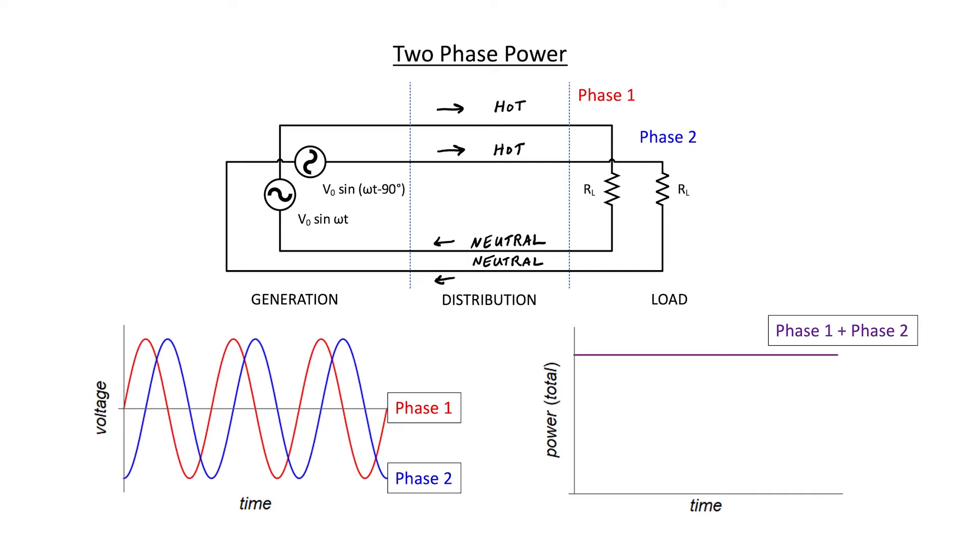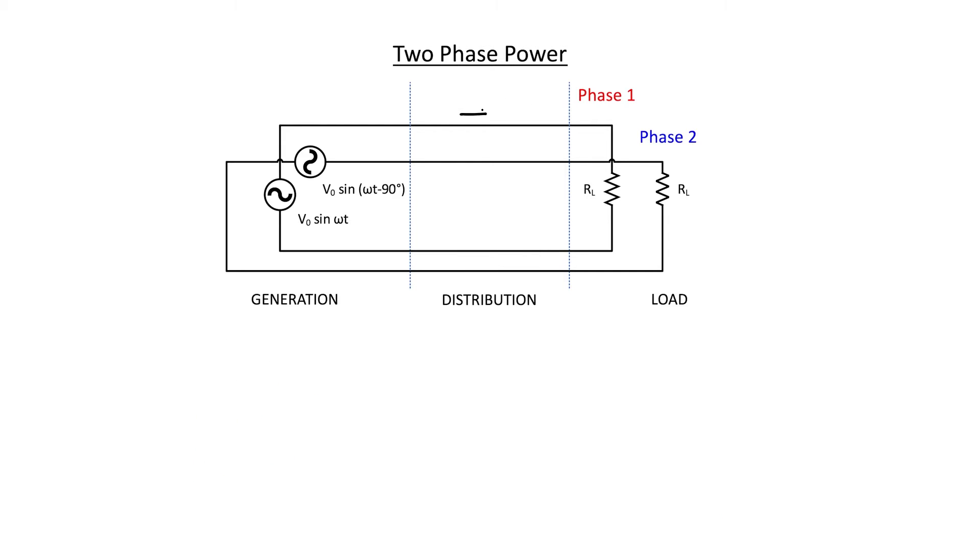Of course, in any power distribution system, you also have earth grounds and earth wires for safety reasons. These should not ordinarily be carrying any current at all. I'll be leaving those off this schematic for our analysis here. Let's call the current in this phase one wire I1. The same current is going to flow in the neutral. Likewise, let's call this current corresponding to phase two I2, and we would have that same current flowing through the neutral as well.